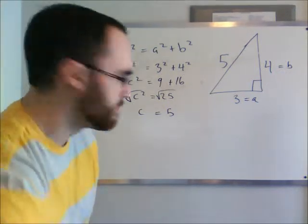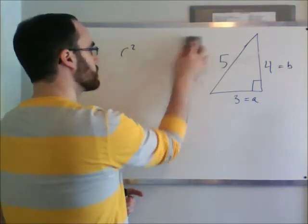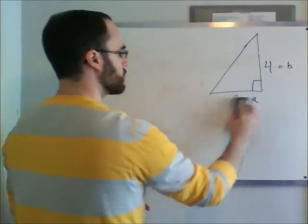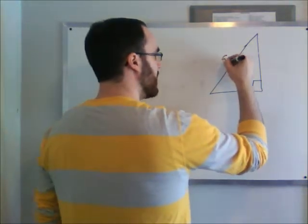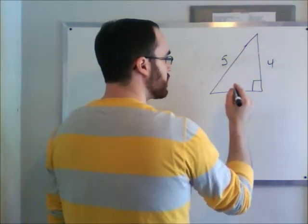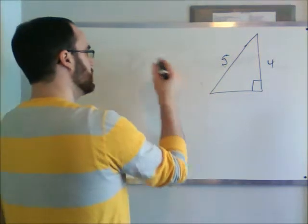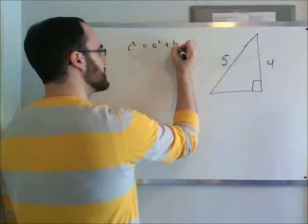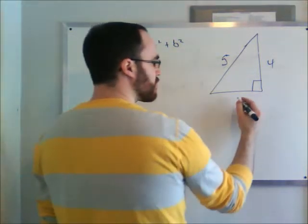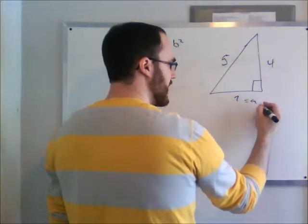Let's try another side. So let's say we had five, four, and we don't know this side. Then we'll say that c squared equals a squared plus b squared, the same equation. However, now the unknown is equal to a.